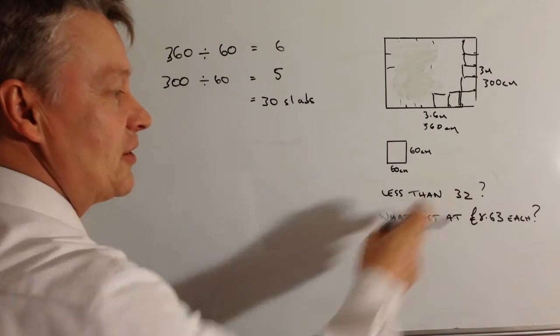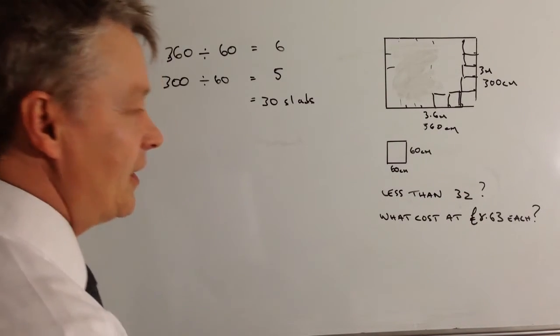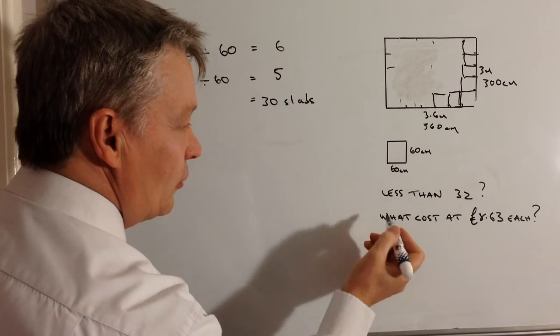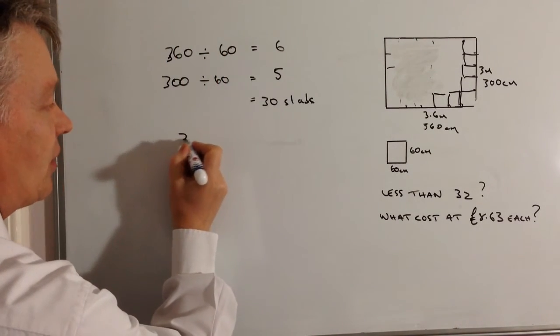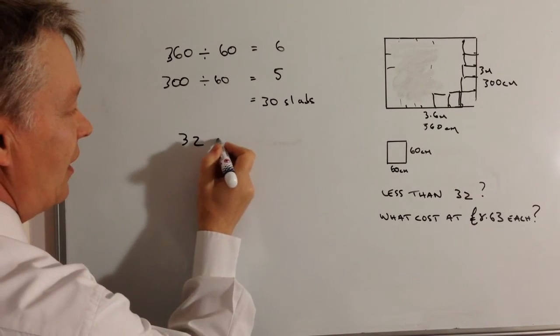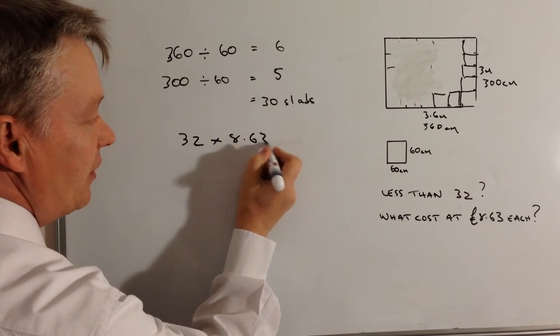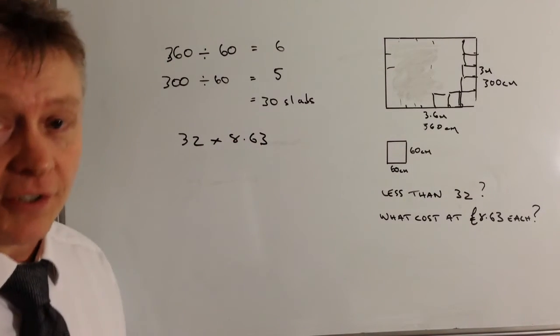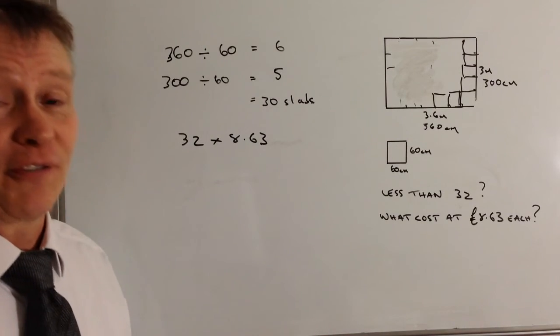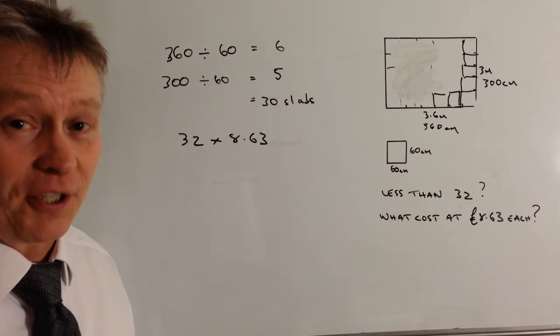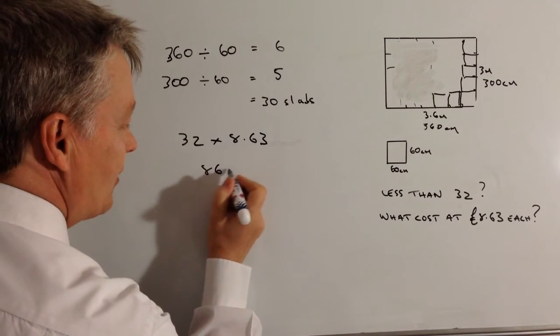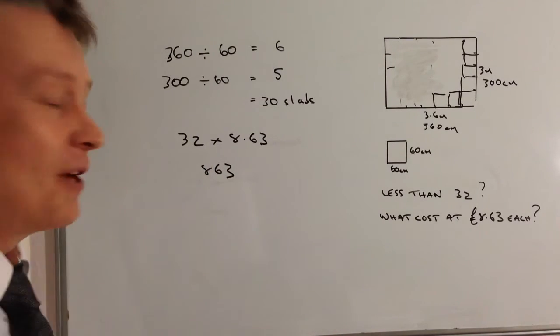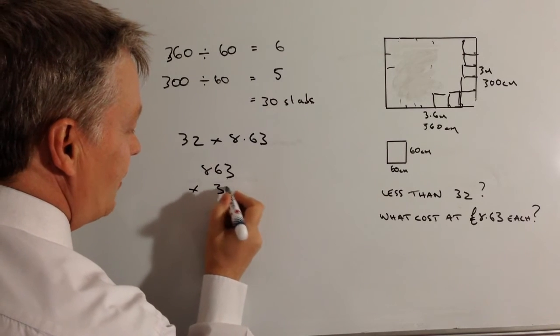So yes, he's got plenty and he's actually got two left over. In terms of the absolute cost, they're £8.63 each. So 32 times £8.63 is the question that I need to do. Now there will be several different ways in which you're going to do this. I'm just going to use standard long multiplication. I'm going to say that's 863 pennies multiplied by 32.